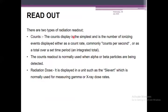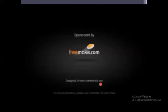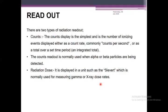There are two types of readout. The first is radiation count readout — the simplest type — displaying the number of ionizing events either as a count rate, commonly counts per second, or as a total over a set time period. Count readout is normally used when alpha or beta particles are being detected. The second is radiation dose, displayed in units such as the Sievert, which is normally used for measuring gamma or X-ray dose. These are the key features of the Geiger-Müller counter covered in this section.